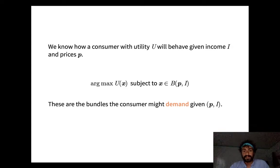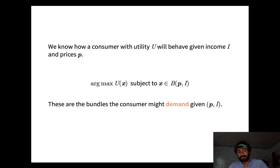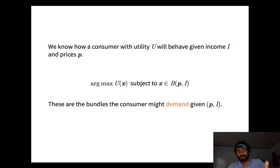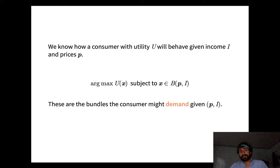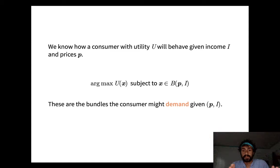Here's the setup: we have a utility function, an income, and prices — all given. The question is: what does the consumer choose? The solution is to maximize the utility function subject to x being inside the budget set. The arg max of u(x) means choosing an x that maximizes u — the argument that maximizes the function — subject to the constraint that x is an element of the budget set, so we're only choosing affordable bundles.